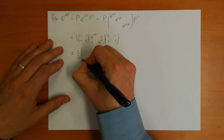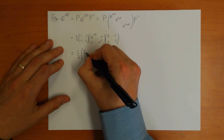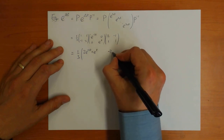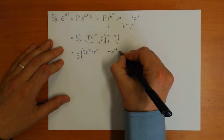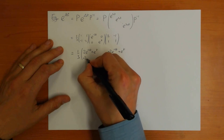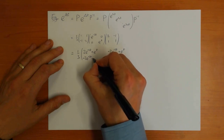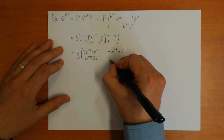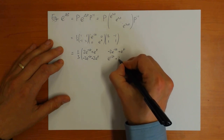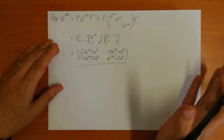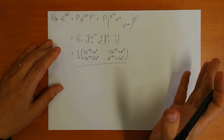Multiplying all that out, the result is one-third times the matrix [2e^(-2t) + e^t, -2e^(-2t) + e^t; -2e^(-2t) + 2e^t, e^(-2t) + 2e^t]. There you go — you've calculated the exponential of a matrix.